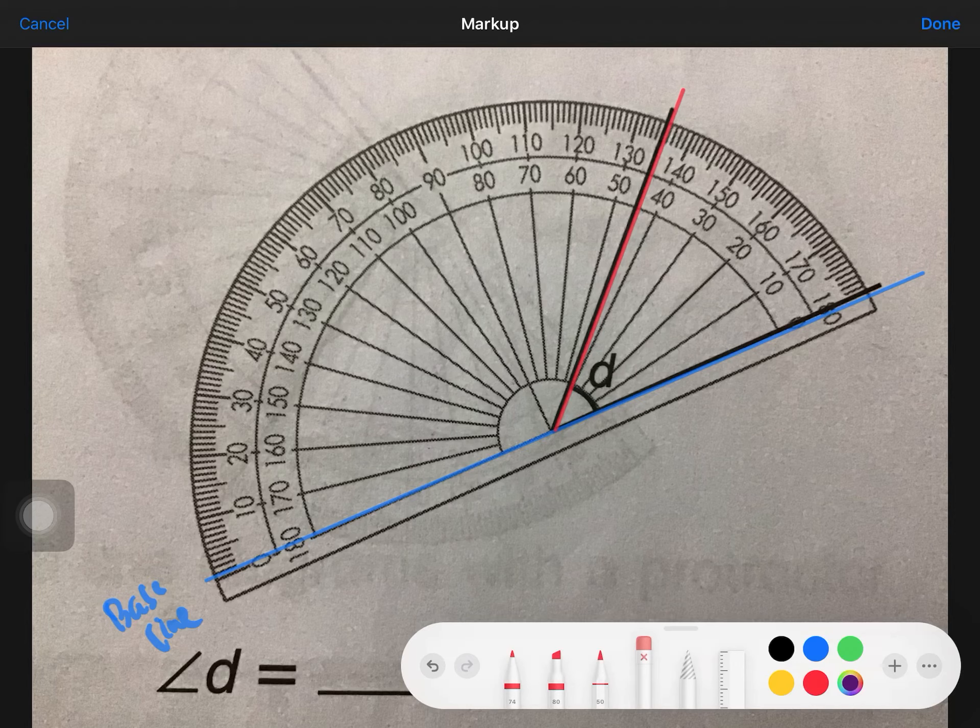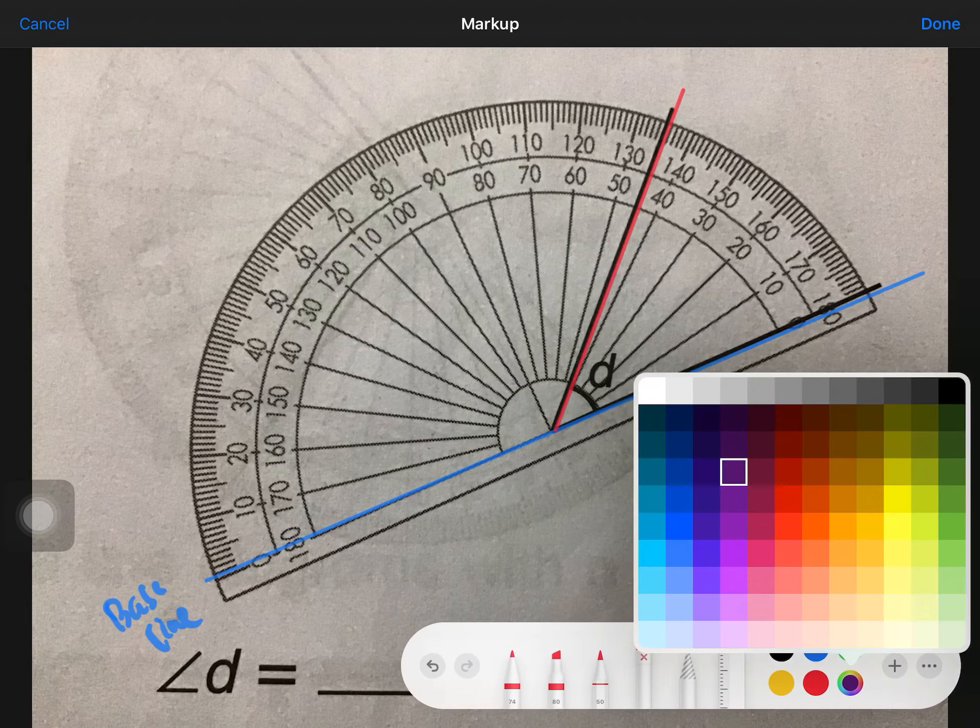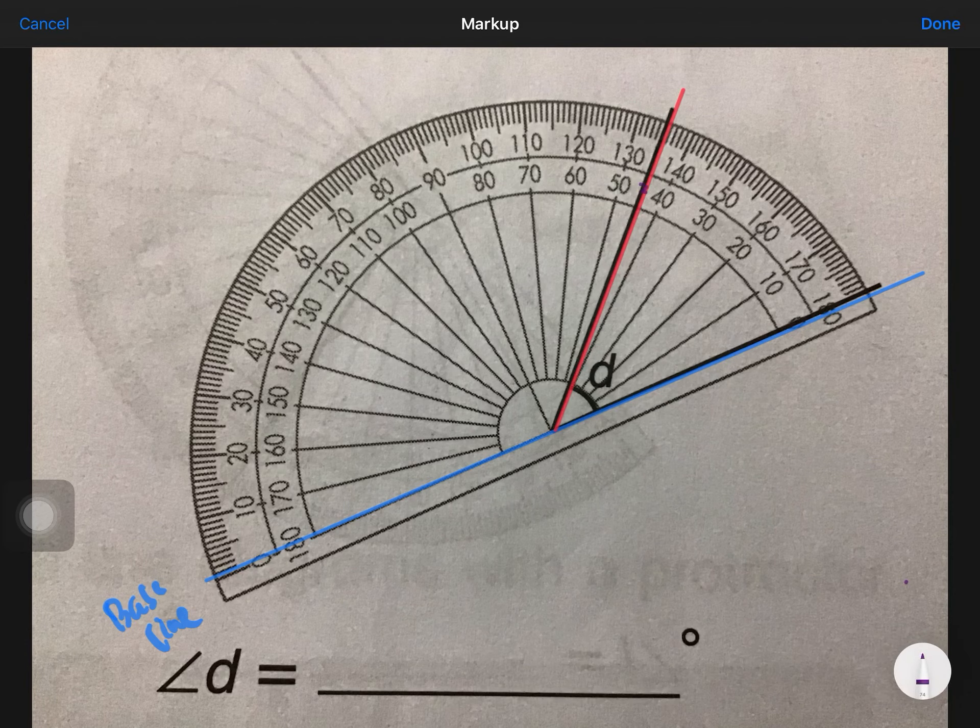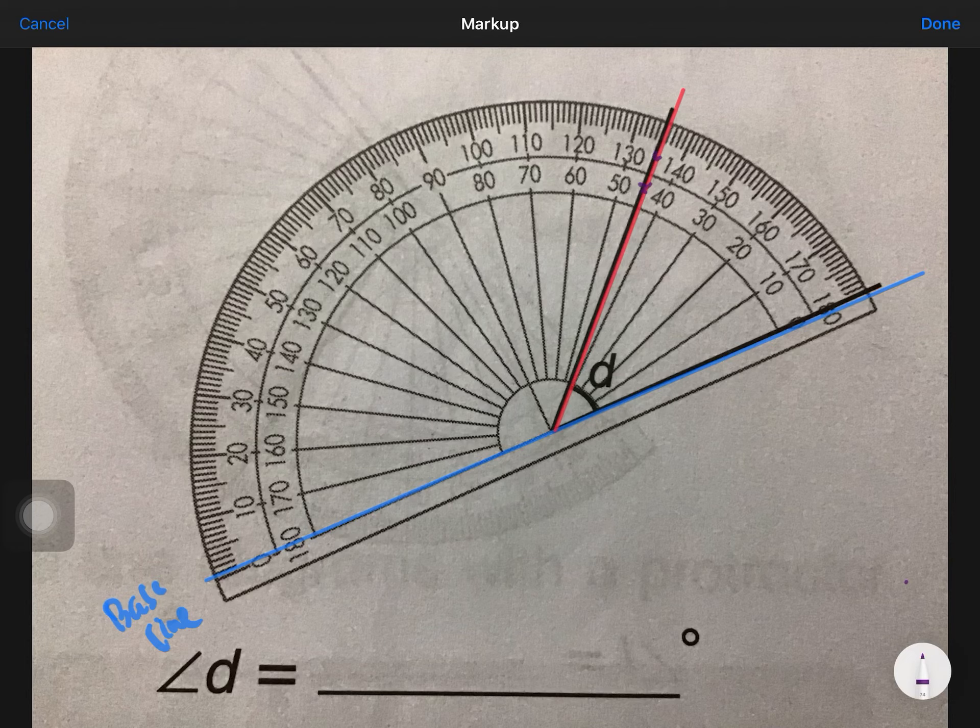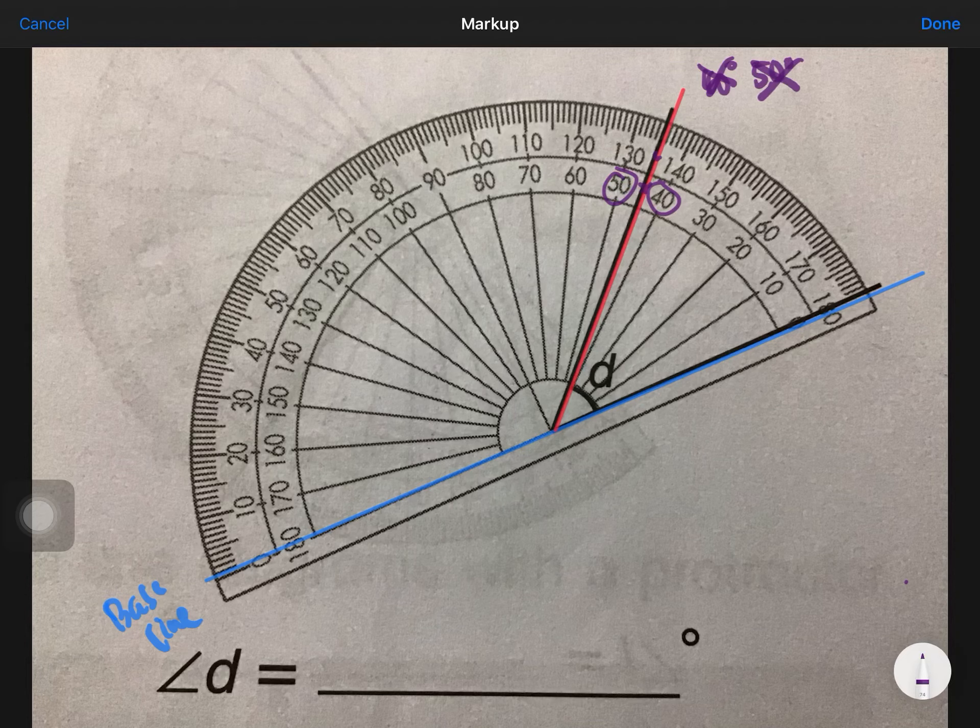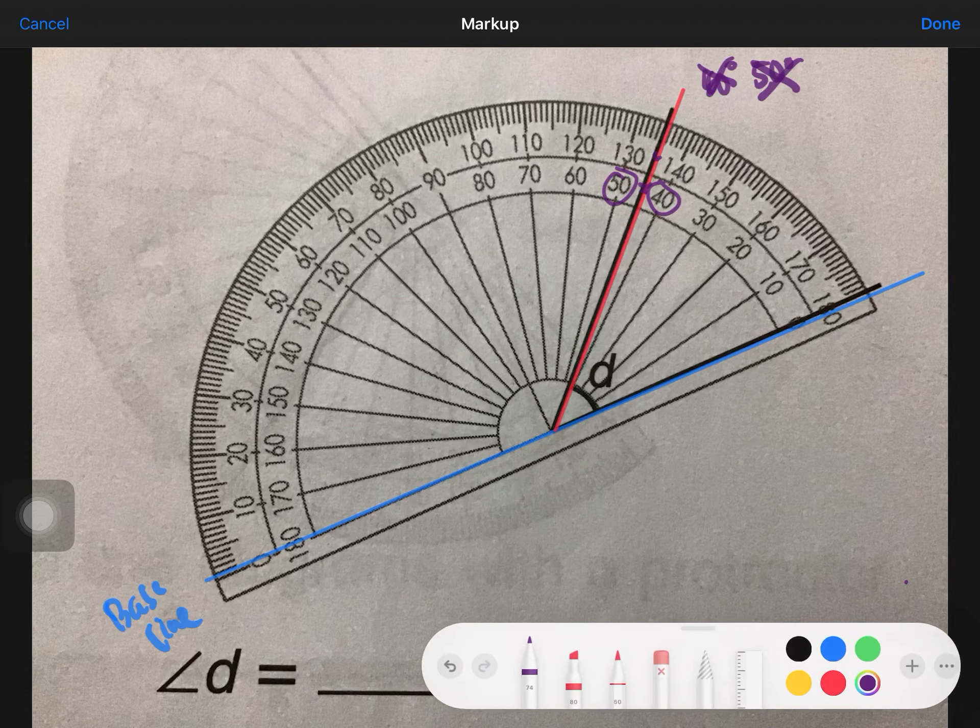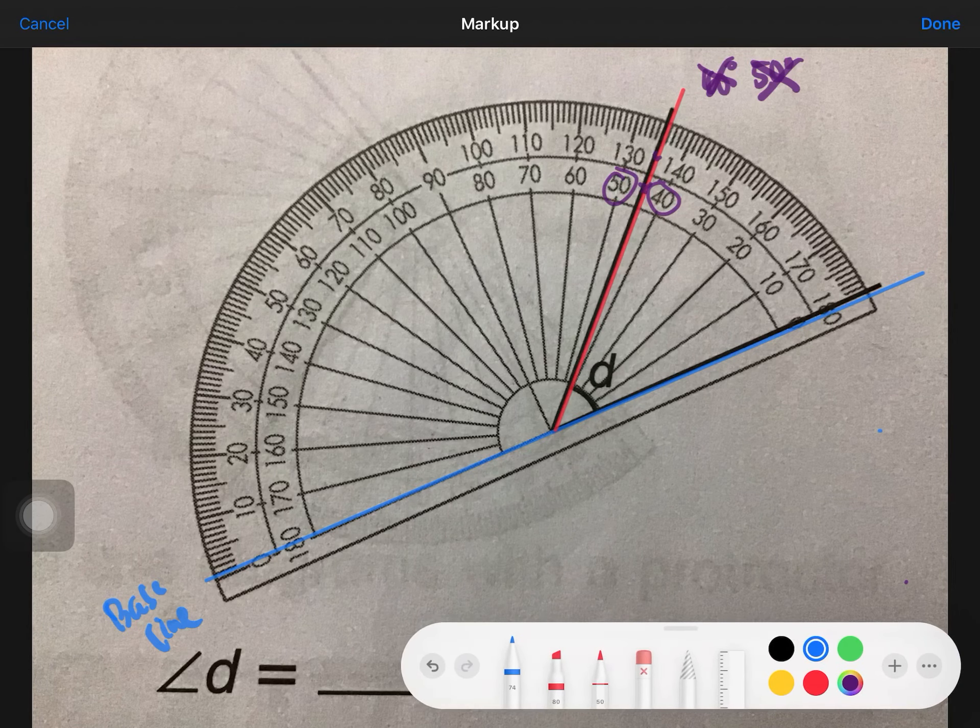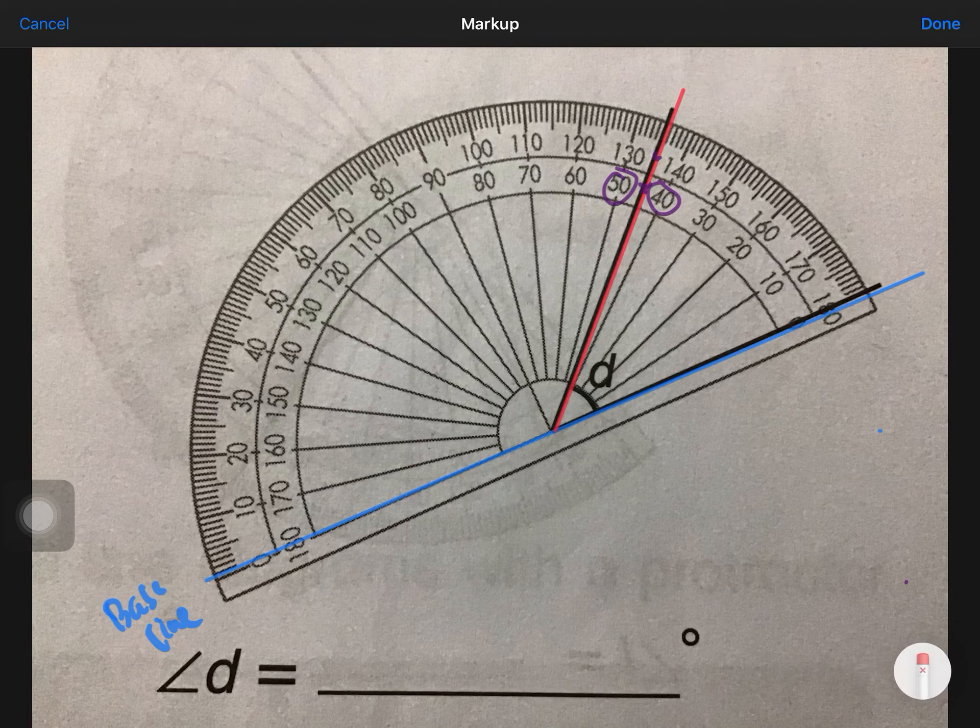Do you realize that there's something different about it from the previous two examples? It's somewhere in the middle here, so it's between 40 and 50. So if you write 40 degrees you're wrong, if you write 50 degrees you're also wrong. The answer is between 40 and 50. What's the answer? Yes, you got it right, it is 45 degrees.